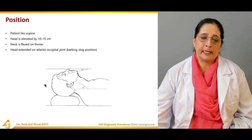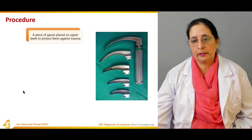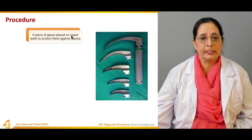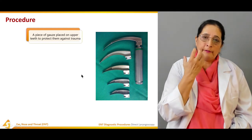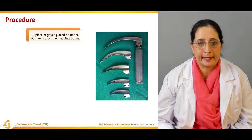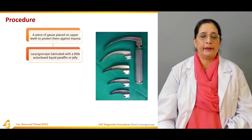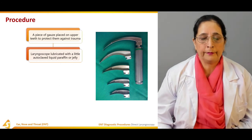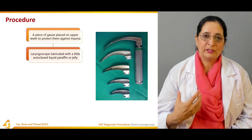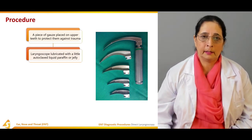The head is extended on the atlanto-occipital joint — this is the 'barking dog position.' You can see the head is extended. During the procedure, a piece of gauze is placed on the upper teeth to protect them against trauma. The laryngoscope is lubricated with a little autoclaved liquid paraffin or jelly for easy entry, causing less pain and injury.